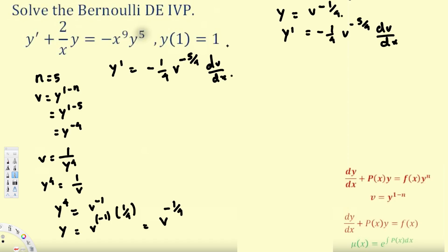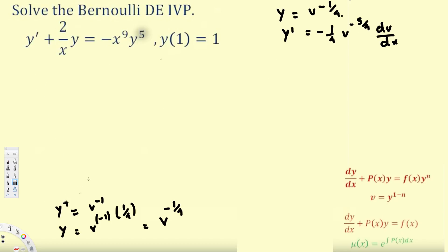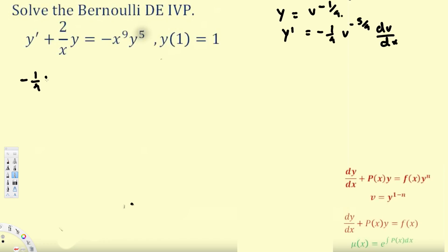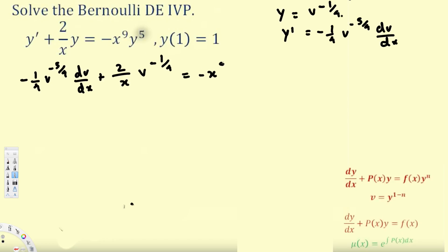These are the two terms we need in order to change this equation. Now let's replace this equation. We just have to find y and y prime in terms of v, then replace. So replacing y prime gives us minus 1 over 4 times v power minus 5 over 4 times dv/dx, plus 2 over x times v power minus 1 over 4, equals minus x power 9 times v power minus 5 over 4.